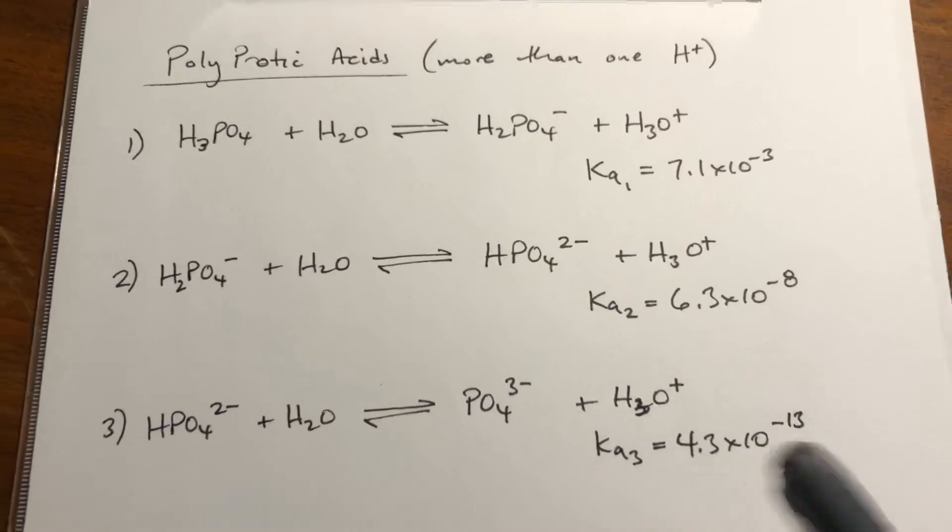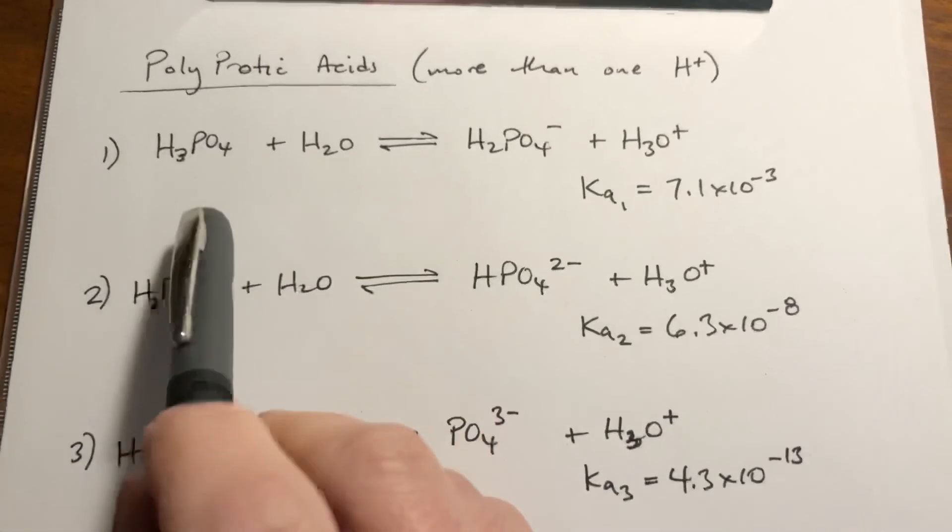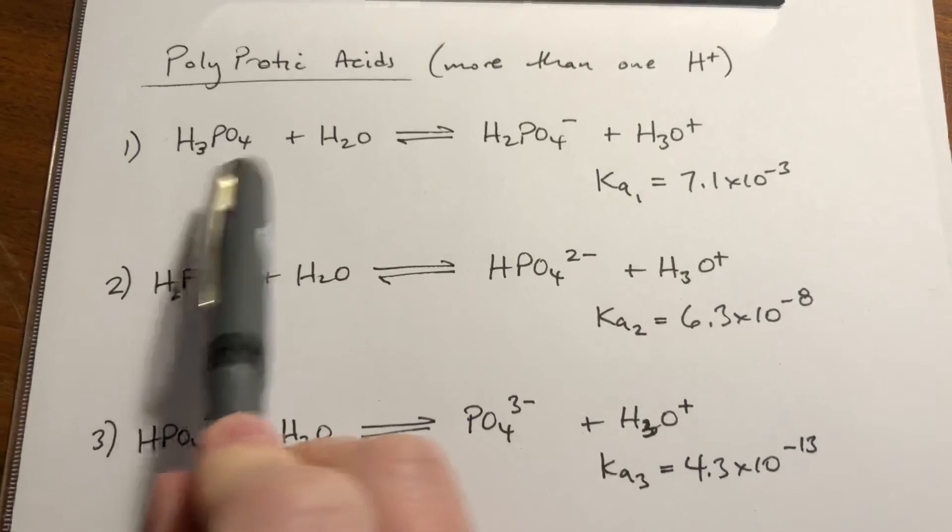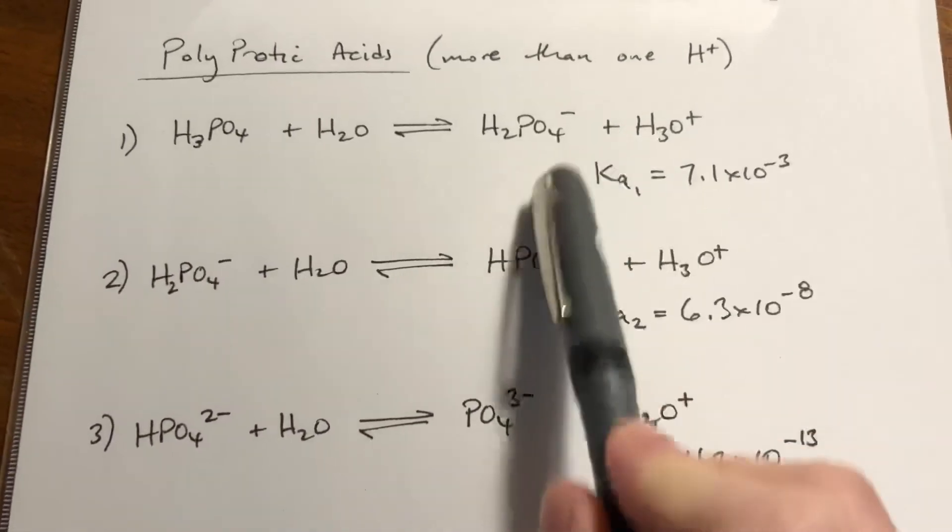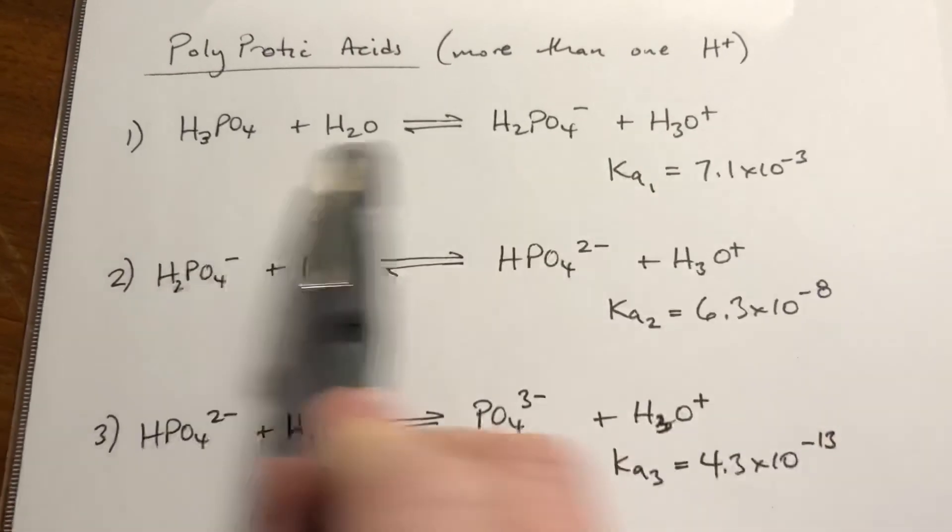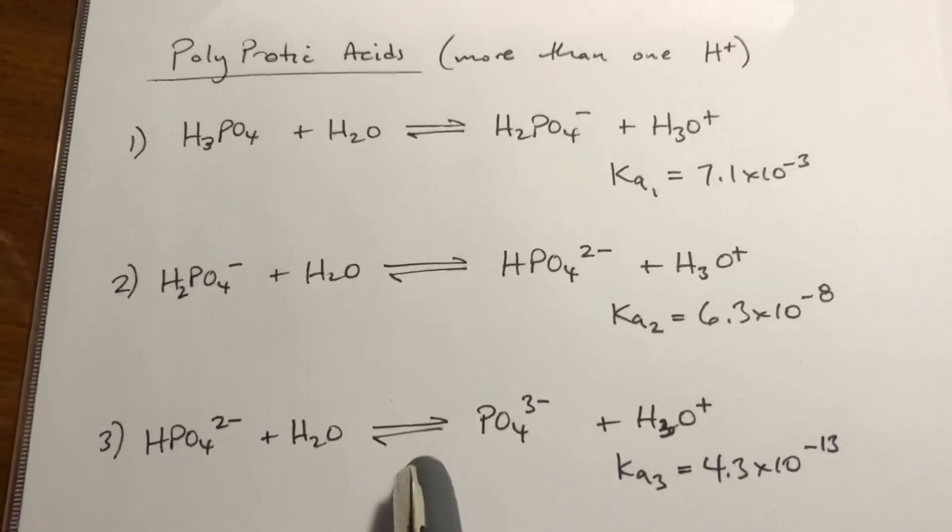Let me summarize again. So if you have H3PO4 thrown in water, the first Ka value matters. You go to an ice method problem for this first reaction, and you'd basically ignore the presence of these other two.